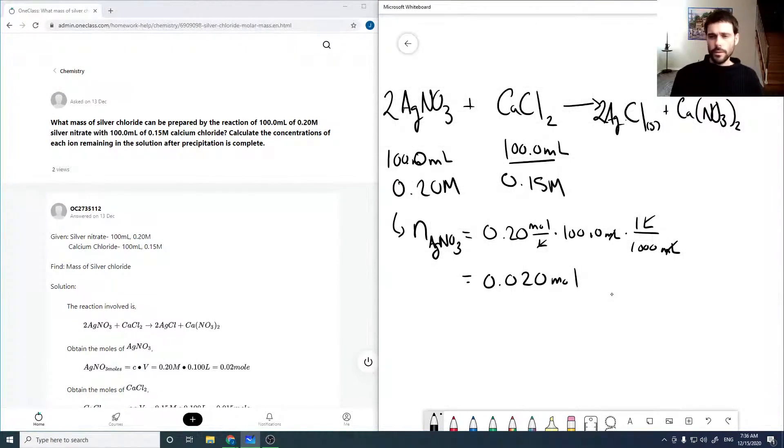We can do the same thing for calcium chloride, which is 0.15 moles per liter times 100 mL times one liter per thousand mL. So that'll cancel the mL and the liters, giving us 0.015 moles.